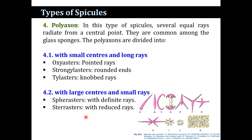In polyaxon spicules, several equal rays radiate from the central point. They are common among the glass sponges. Polyaxons are divided into two categories: those with a small center and long rays, and those with a large center and small rays. In the small-center type, oxyasters have pointed rays, strongylasters have rounded ends, and tylasters have knob-like ends. In the large-center type, spherasters have definite rays, while another form has rays reduced in number.